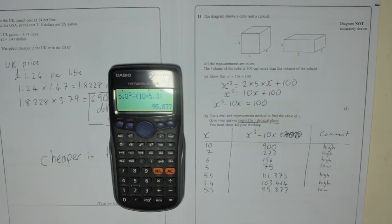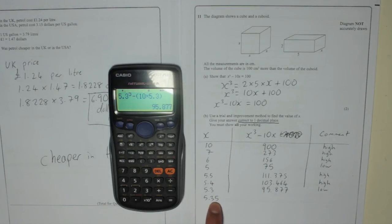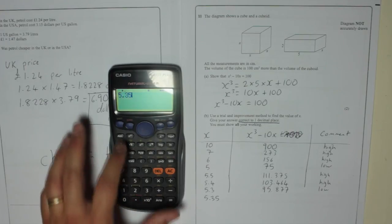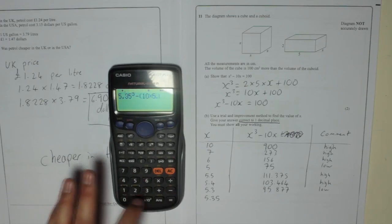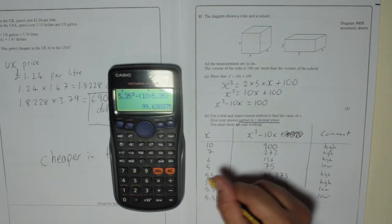Unfortunately what they want you to do now is go halfway in between 5.3 and 5.4. So that would be 5.35. This is the only one we're going to do with more than one decimal place. So I'm going to do 5.35 cubed minus 10 times 5.35. And I get 99.63 and so on. That is too low. So that means if the halfway point is too low the actual answer must be above 5.35. Which means it's closer to 5.4 than it is to 5.3. Because the halfway point is too low the answer is above it. Which makes it closer to 5.4 than 5.3. So 5.4 is our answer.